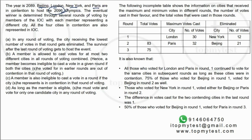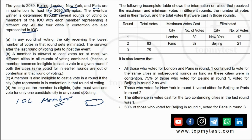The IOC has some members — each member represents one city, and there might be members from Delhi, Bombay, Frankfurt, Amsterdam, etc. But the four cities in contention are Beijing, London, New York, and Paris. All members vote for one of these four cities. The rule is: in any round of voting, the city receiving the lowest number of votes gets eliminated.